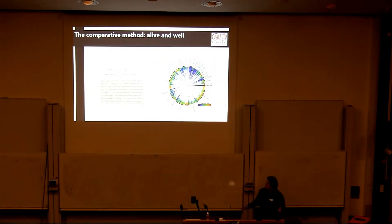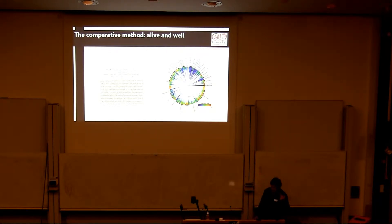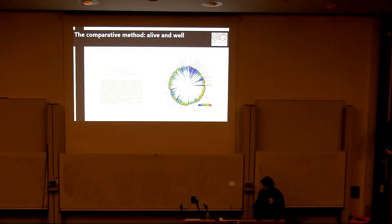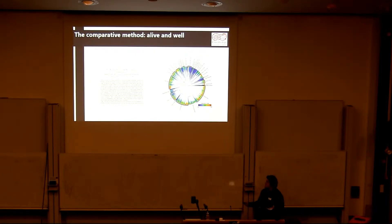In the last 30 years or so, there's been a whole host of new methods to look at trait evolution and diversification on phylogenies. This has really revolutionised the way in which we can account for species history and understand different tempos and modes of evolution.